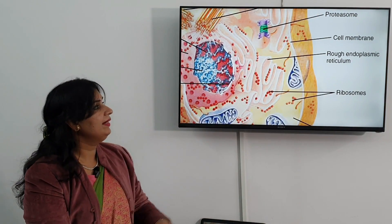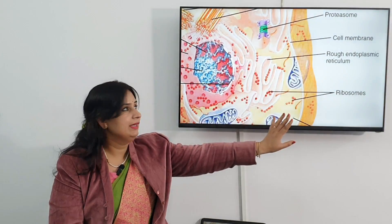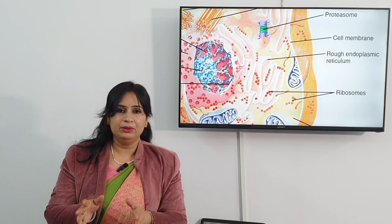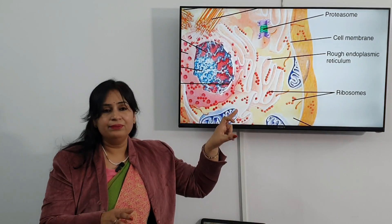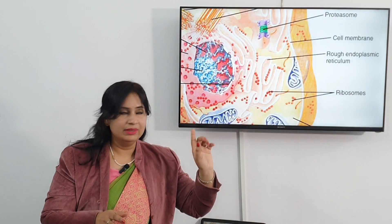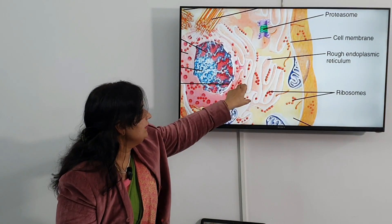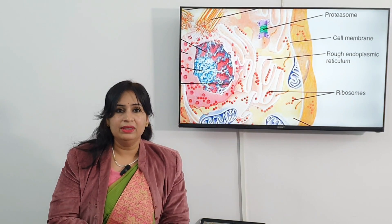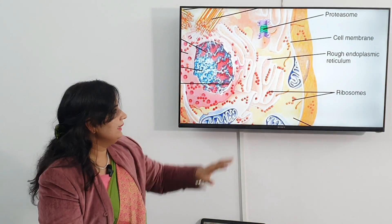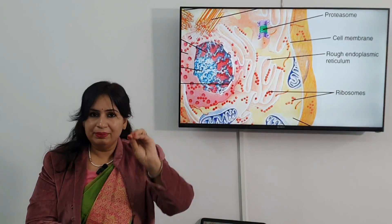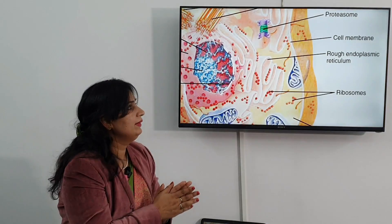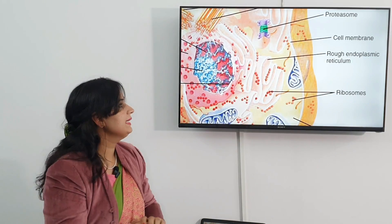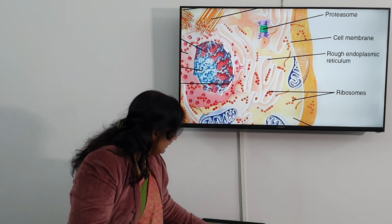Next we can see rough endoplasmic reticulum. There are two kinds of endoplasmic reticulum — rough and smooth. In rough endoplasmic reticulum, there are granules present on it.